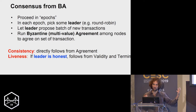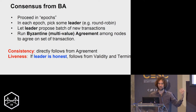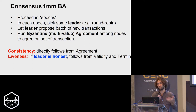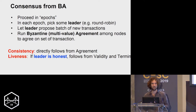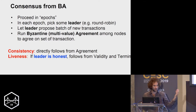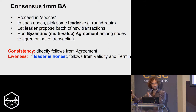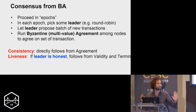Going back to the consensus protocol sketch: if we have a Byzantine agreement protocol, it's easy to see this recipe works. In particular, if the leader is honest, he sends the same block to everybody, and when we run the agreement protocol we agree on that block. This ensures liveness — whenever someone wants to add something, the honest leader puts it in a block, and the validity property guarantees everybody outputs exactly that block. Consistency follows directly from the agreement property, since everybody always agrees on the same block.